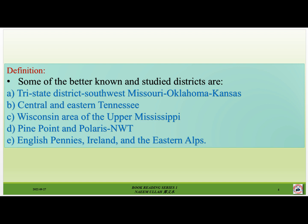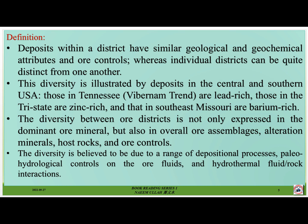Some of the better known and studied districts are: the Tri-State district of southwest Missouri, Oklahoma, and Kansas; central and eastern Tennessee; the Wisconsin area of the upper Mississippi; Pine Point; the Polaris deposit; the Irish Midlands; the English Pennines; Ireland; and the Eastern Alps deposits. Deposits within a district have similar geological and geochemical attributes. Individual districts can be quite distinct from one another — for example, those in Tennessee are lead-rich, those in the Tri-State are zinc-rich, and those in southeast Missouri are barium-rich.